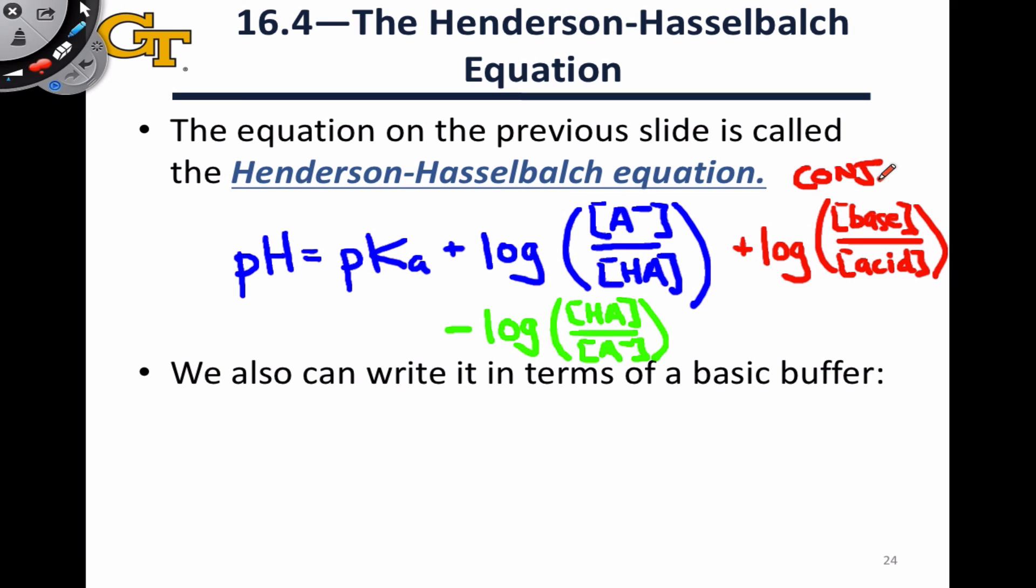Here it's just worth keeping in mind that base and acid refer to conjugates. They have to be related as conjugates, otherwise the dissociation of the weak acid won't apply. And of course you may see the inverse of this as well, minus log of acid over base.